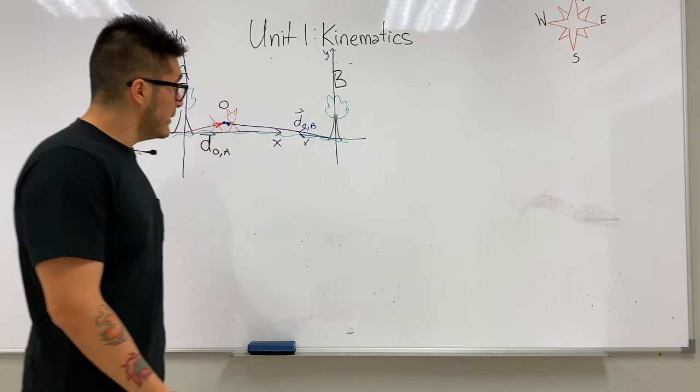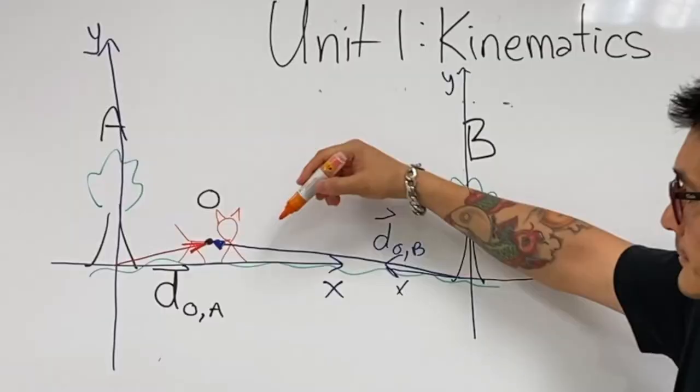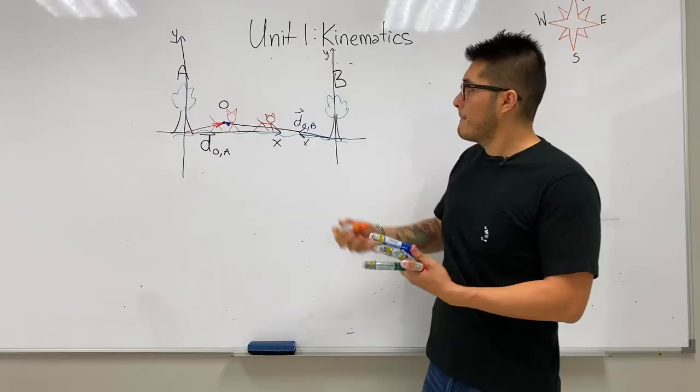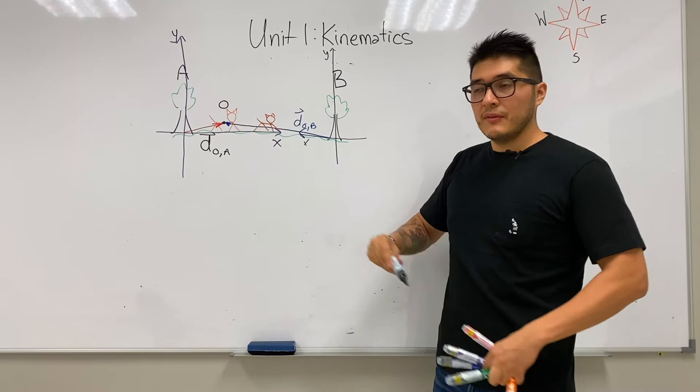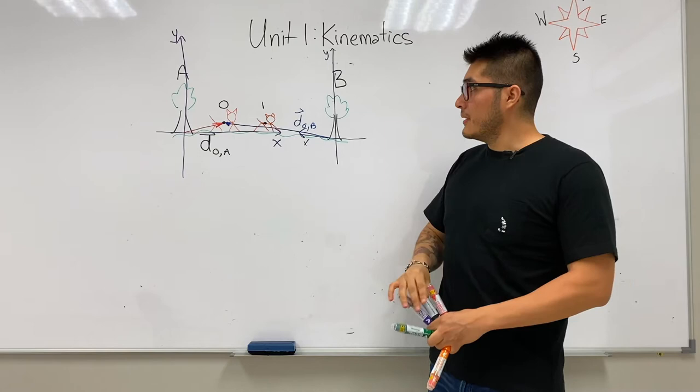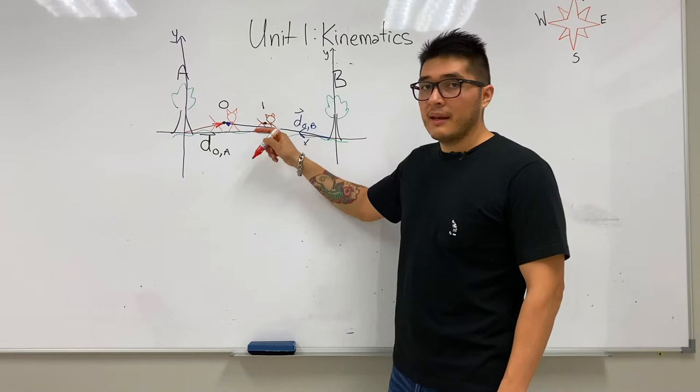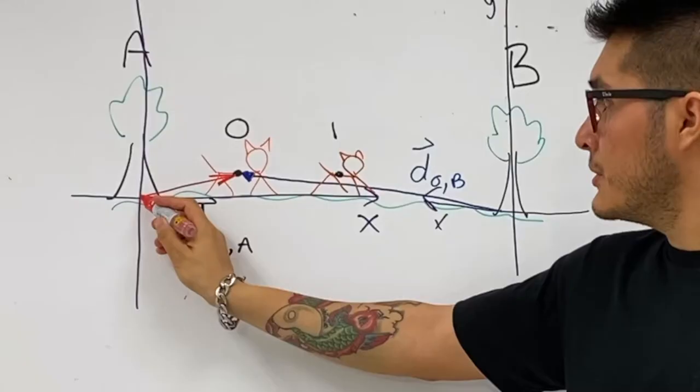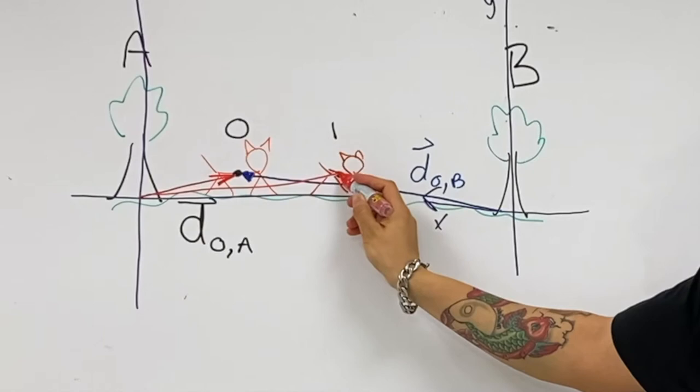Let's suppose that our cheetah is moving to the right. So this would be the first frame. The cheetah has moved to the right. Now we can draw a new set of position vectors at time one. Again, how do we draw position vectors? From the origin to where the object is with the direction.